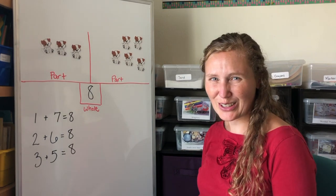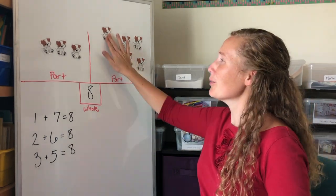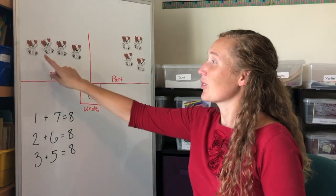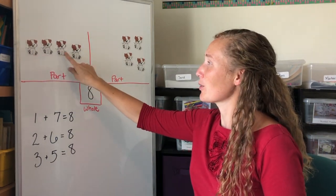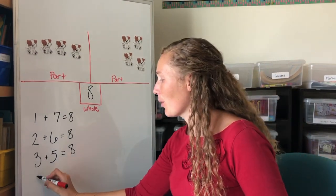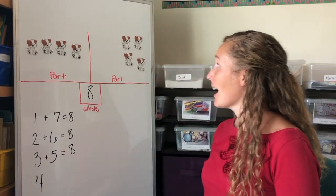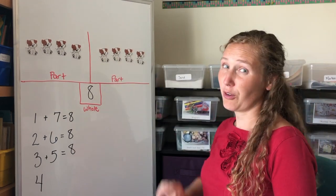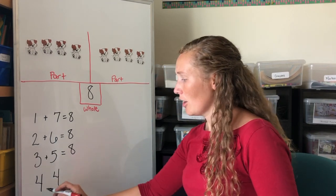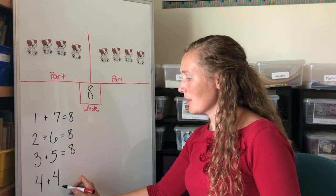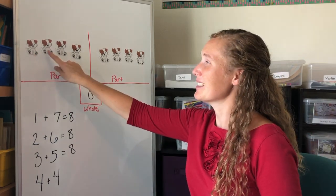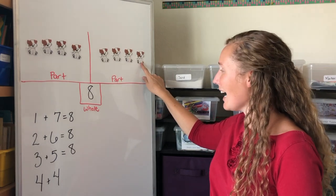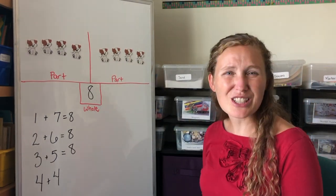You ready to move another dog over? He came over to be with friends. One, two, three, four dogs on that part of the board. And one, two, three, four dogs on that part of the board. Four plus four is one, two, three, four, five, six, seven, eight — which is our whole.